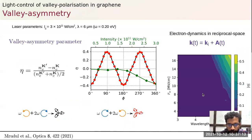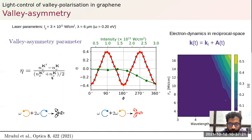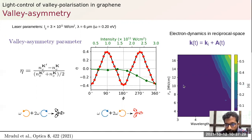We show this can be effectively done and modulated as a function of phi, which we calculate by defining a valley asymmetry parameter. This effect is more prominent for higher intensities and lower wavelengths, because the electron dynamics is proportional to the vector potential.